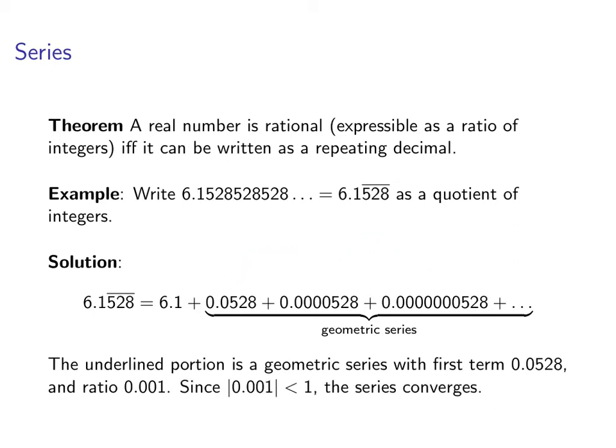Since that ratio in absolute value is less than 1, that geometric series converges. So now we can use our formula for the sum of a convergent geometric series. Remember that 6.1 out in front does not fit with the geometric series portion. So we'll do 6.1 plus the sum of the convergent geometric series. Remember the first term was 0.0528, and the ratio was 0.001. So we go first term divided by 1 minus the ratio.